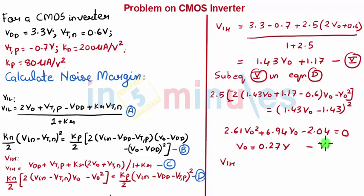Substitute equation number 6 in equation number 5. We will get VIH equal to 1.43 into 0.37 plus 1.17, equal to 1.55 volts. Let's call this equation number 7.